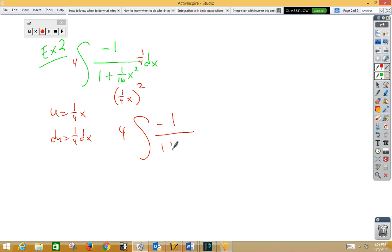negative 1 over 1 plus u squared du. That would be arc cotangent, so I have 4 inverse cotangent of one-fourth x plus c.